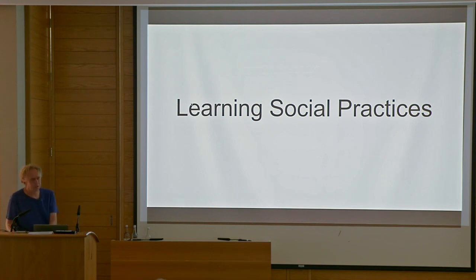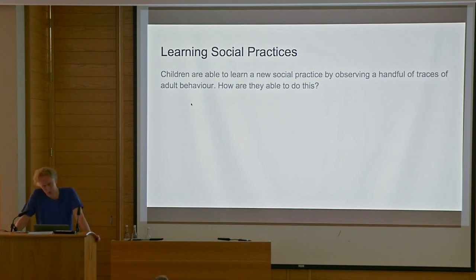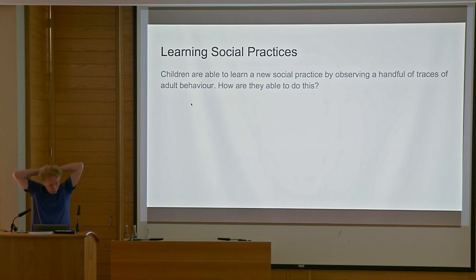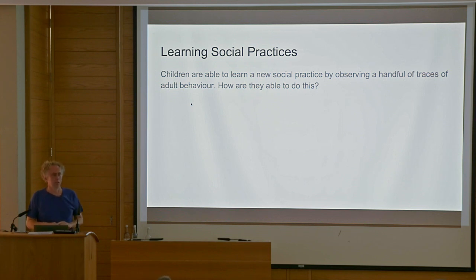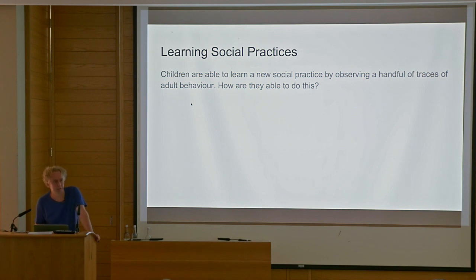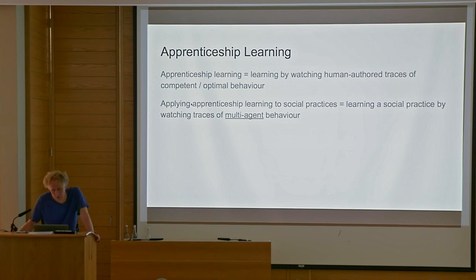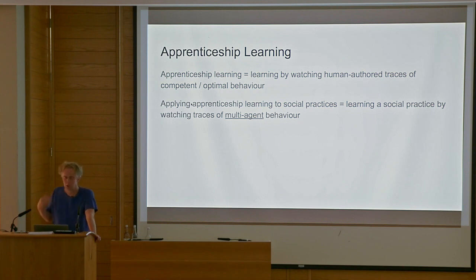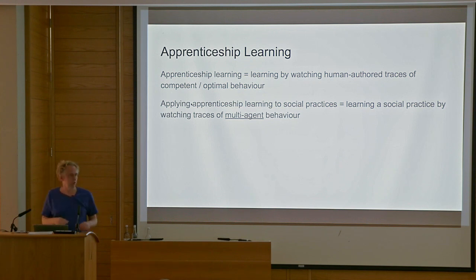The second application is about learning social practices. Imagine you're a child watching some adults performing various social practices — you'll be able to learn the practice from just a handful of traces of behavior. This is what children do all the time: they watch competent adults socializing and pick up the rules of the games. I'm going to show you an ILP system which is able to learn social practices from traces of behavior, an example of apprenticeship learning where we learn by watching human-authored traces assumed to be optimal or competent.